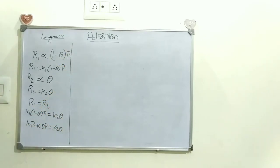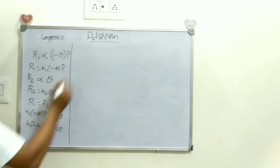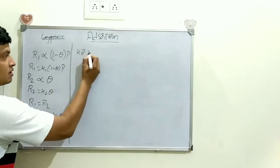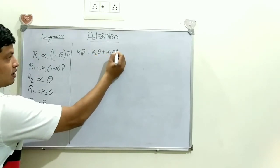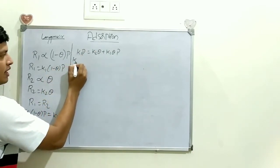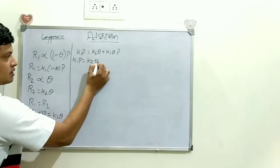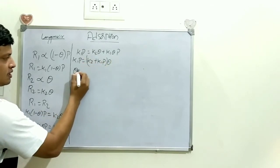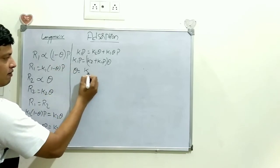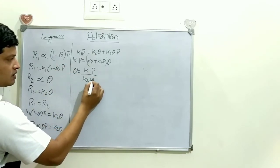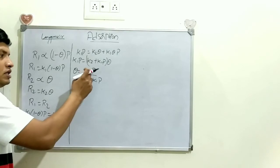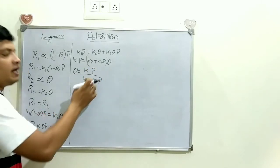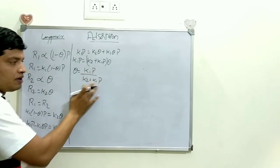Rearranging the equation by taking theta common: K1P = K2θ + K1θP, which gives K1P = (K2 + K1P)θ. Therefore, theta = K1P / (K2 + K1P). Now, divide the right-hand side numerator and denominator by K2 to get: theta = (K1/K2)P / (1 + (K1/K2)P).